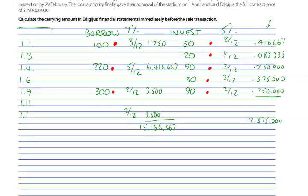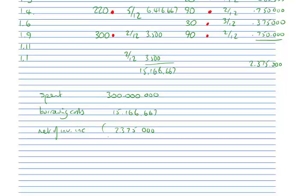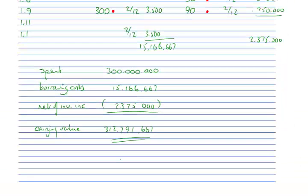The question asks: can you calculate the carrying value of the amount in Adigeus's financial statements immediately before the sale transaction? He spent and his cost card has 300 million, then you've got the borrowing costs of 15.166,667 million, net of the investment income which is 2.375 million. So the carrying value immediately before sale was therefore 312,791,667. And that's it for borrowing costs. I'll see you next time. Thank you.